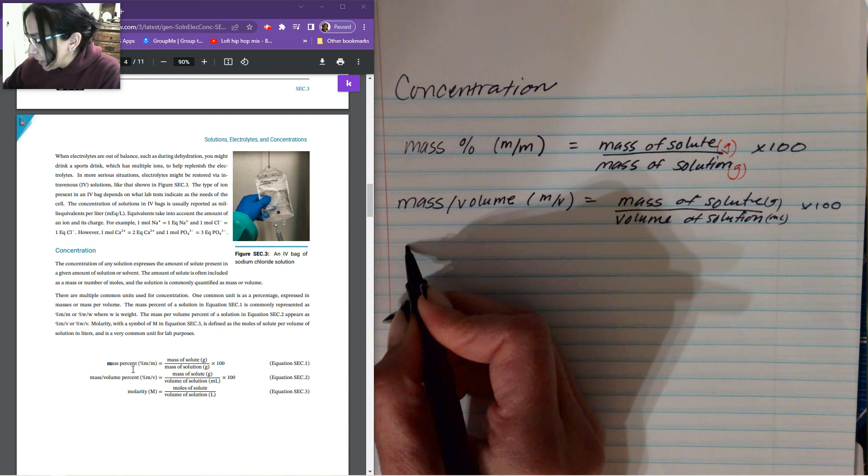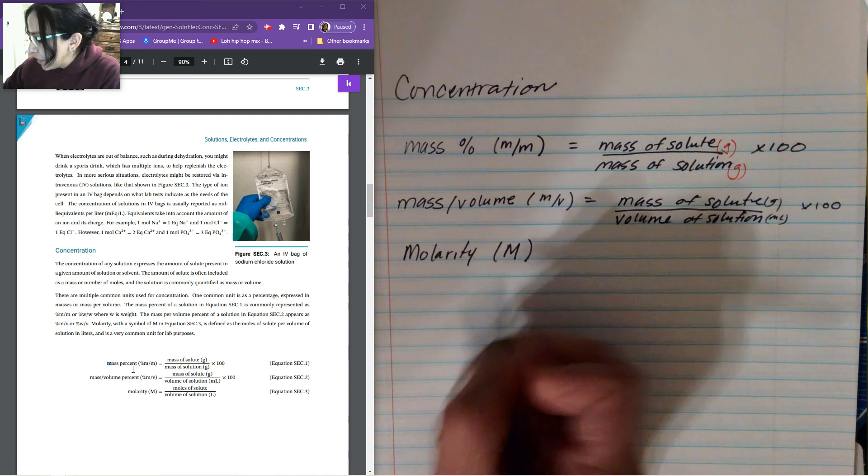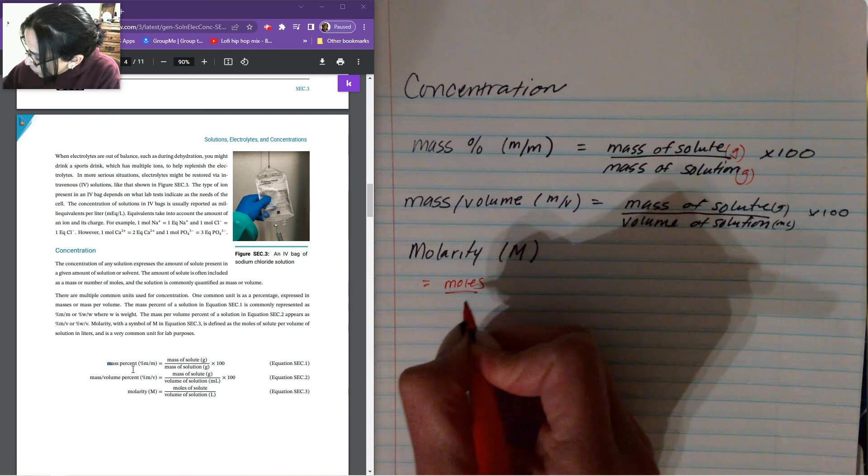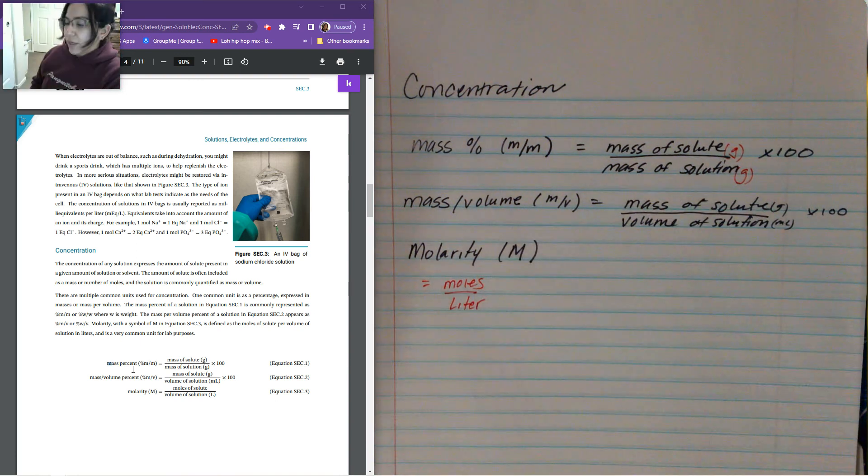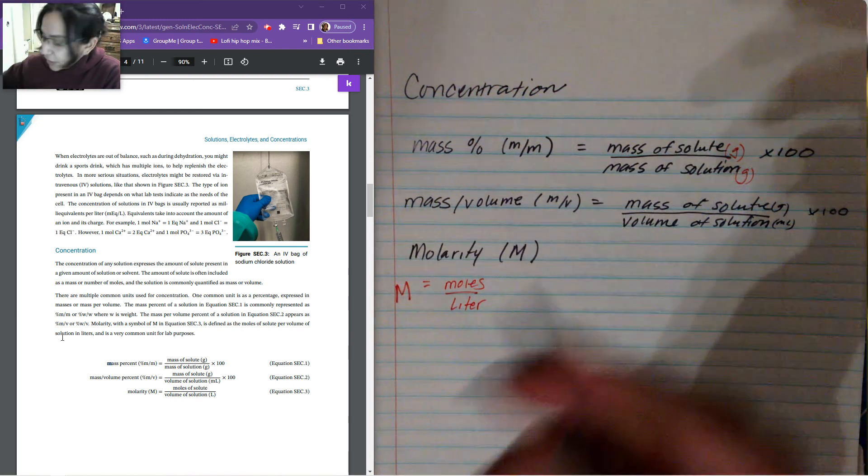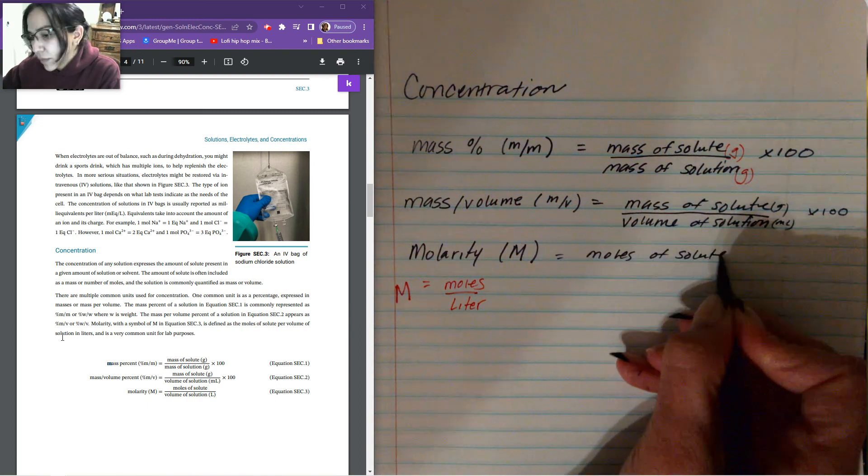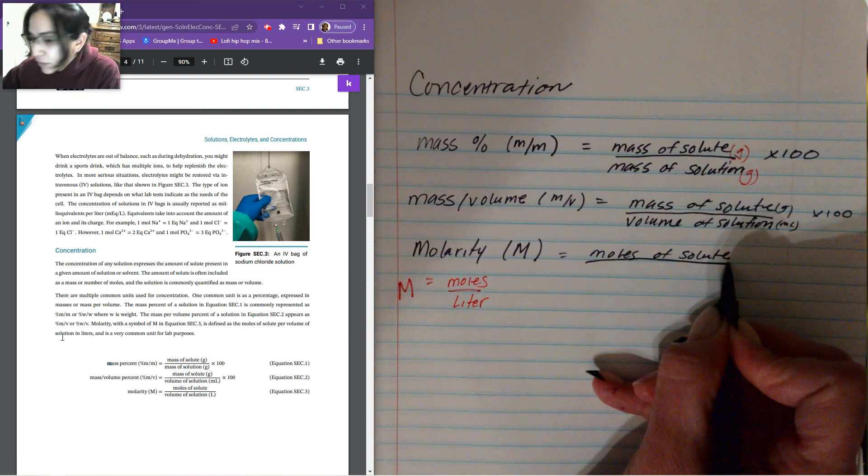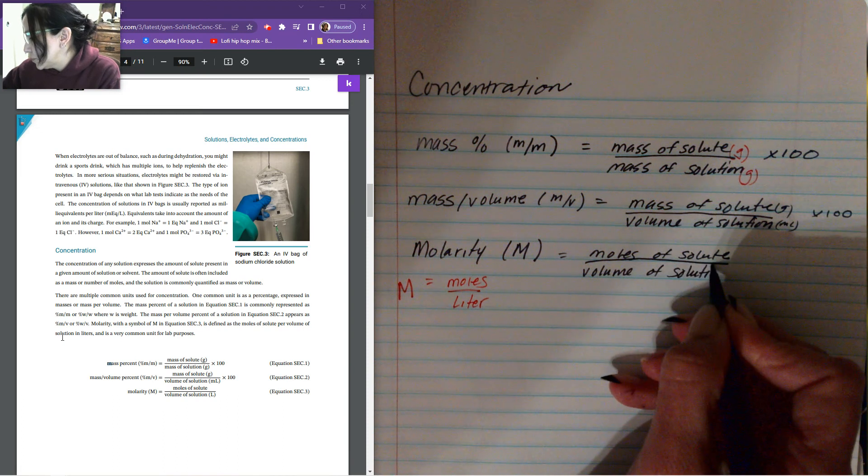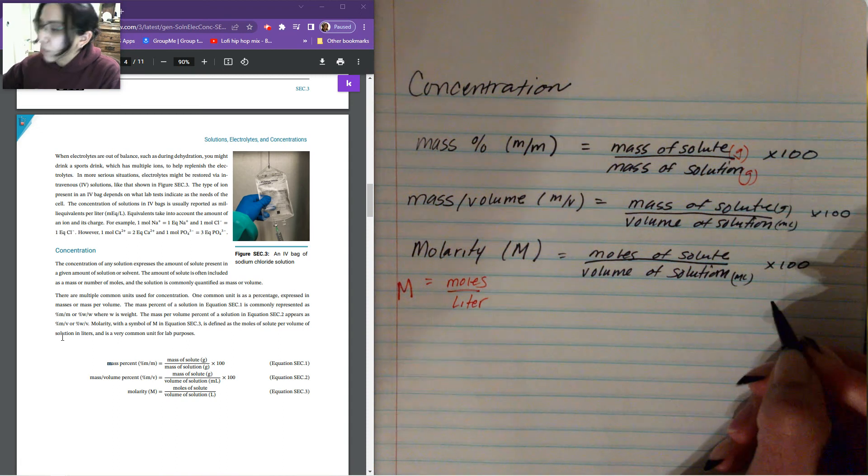And then we have molarity. And this is denoted by a capital M. And if we recall, molarity is equal to moles per liter. That's what the capital M stands for. It stands for moles per liter. And we're going to do the moles of the solute divided by the volume of the solution in milliliters. And multiply that by 100.